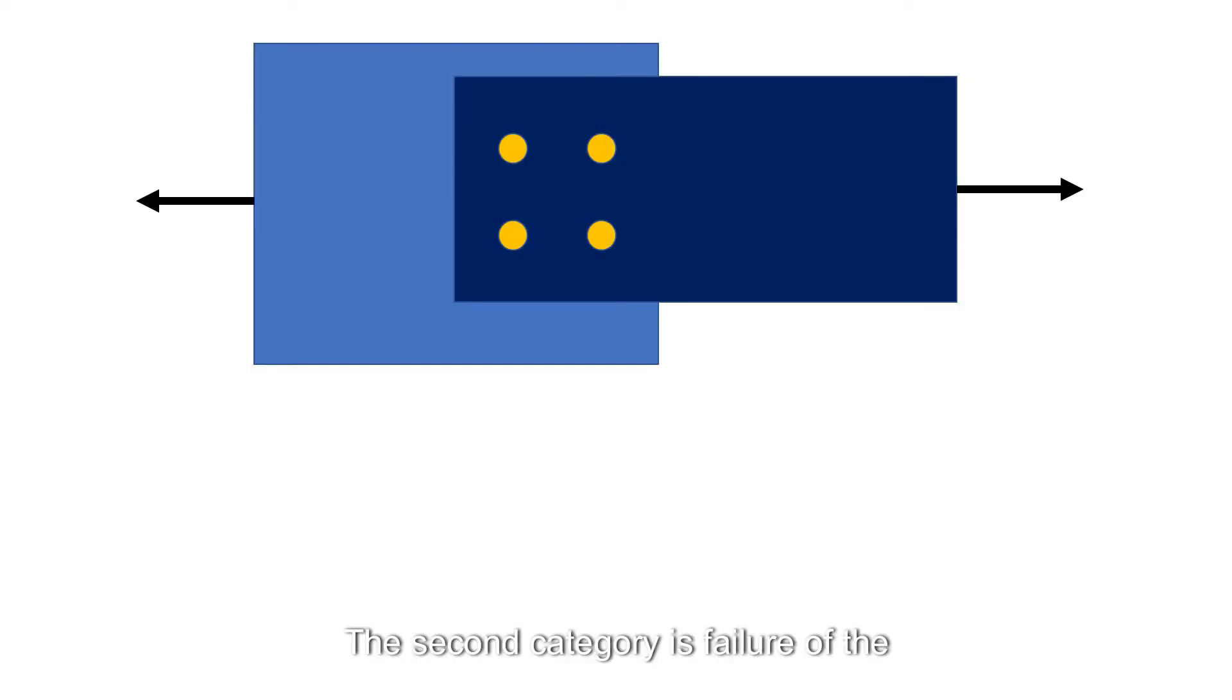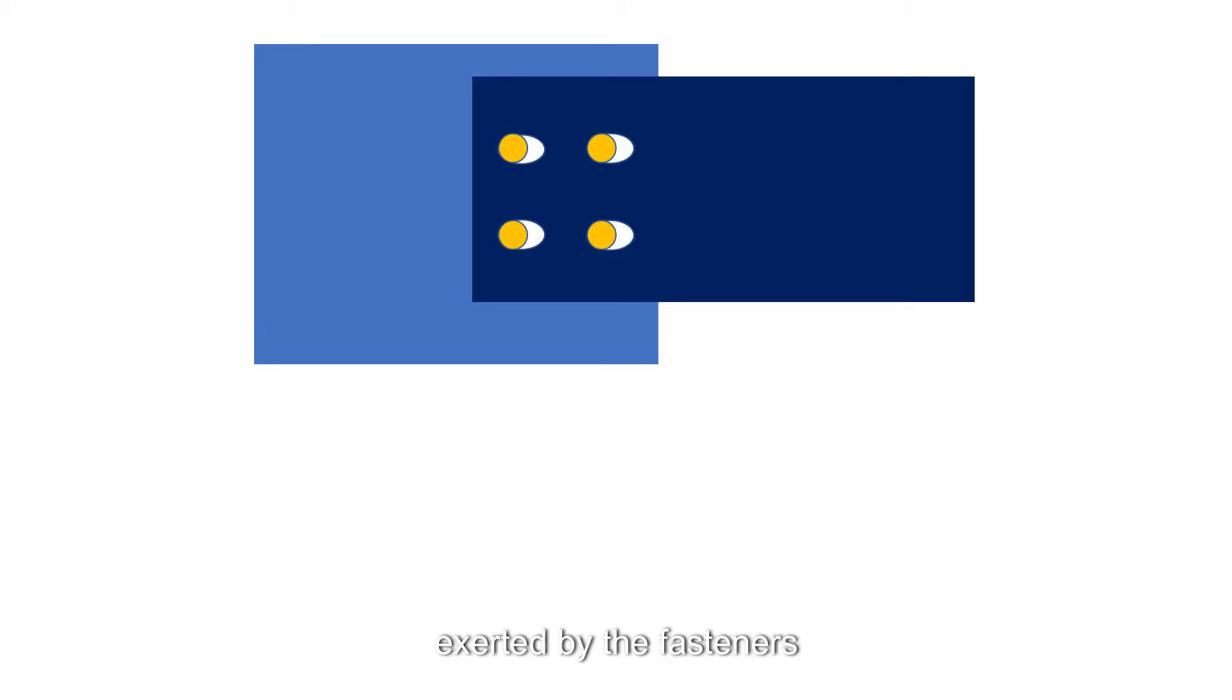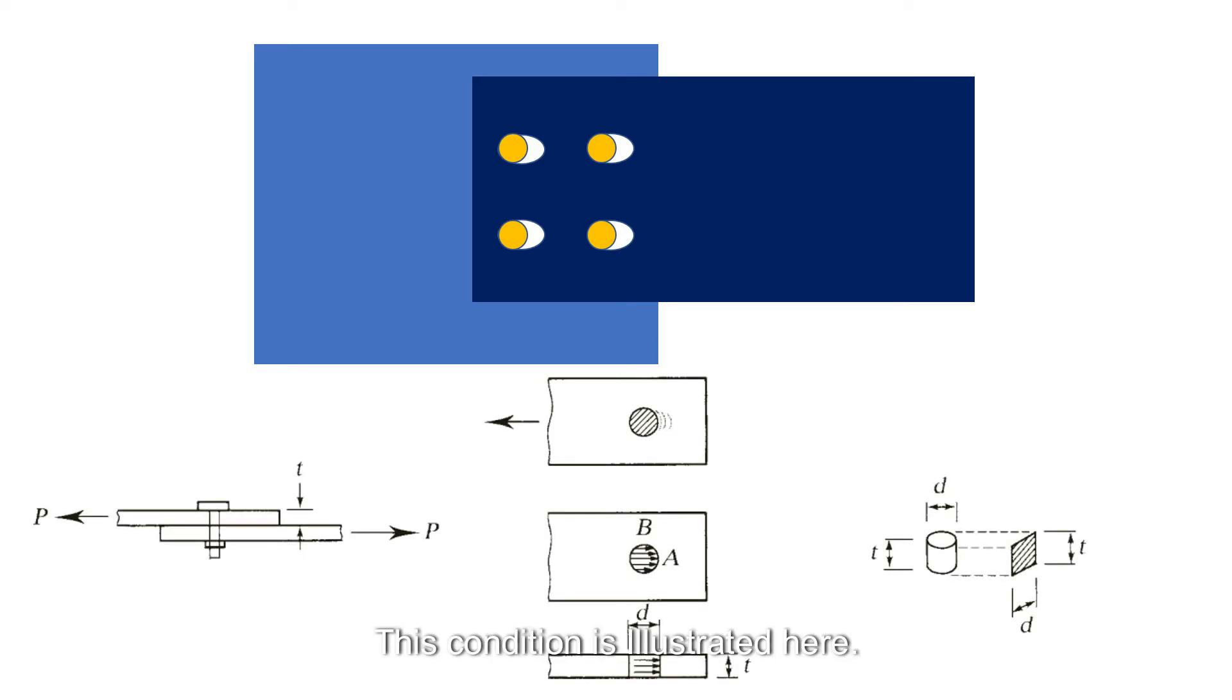The second category is failure of the connected part because of bearing exerted by the fasteners. If the hole is slightly larger than the fastener and the fastener is assumed to be placed loosely in the hole, contact between the fastener and the connected part will exist over approximately half the circumference of the fastener when a load is applied. This condition is illustrated here.